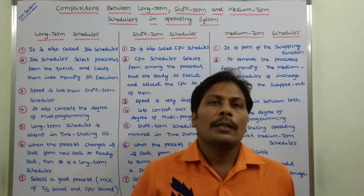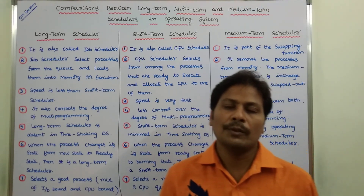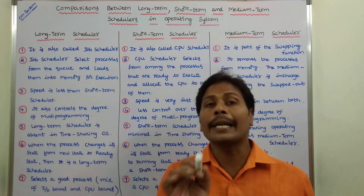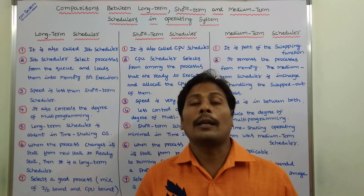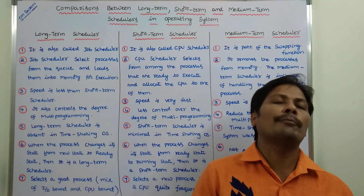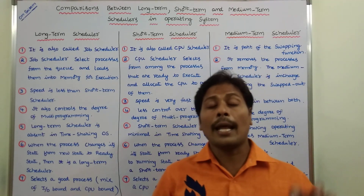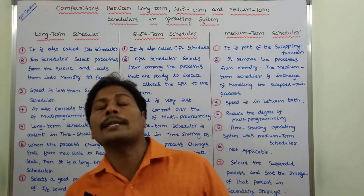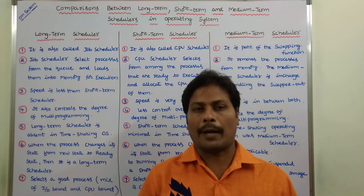The fourth difference: the long-term scheduler controls the degree of multi-programming. In the case of the short-term scheduler, there is less control over the degree of multi-programming, whereas in the case of the long-term scheduler there is more control. The medium-term scheduler reduces the degree of multi-programming.